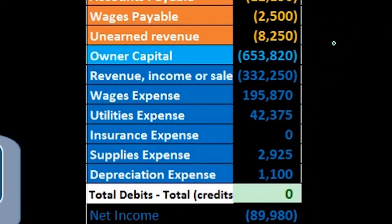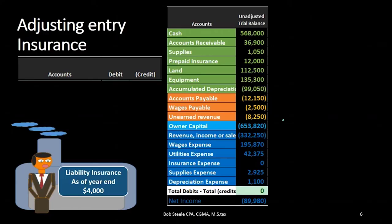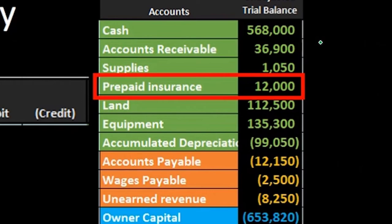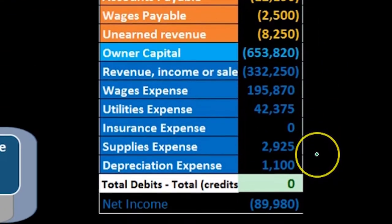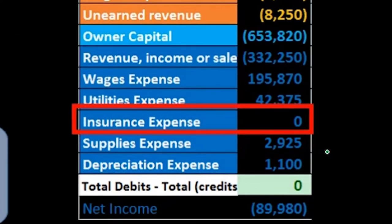If we know that and look at the trial balance, we can determine which accounts will be affected even without fully knowing what's going on. For example, we're talking about insurance expense, and if we look above the blue line for something related to insurance, we can see prepaid insurance. That looks like one of the accounts in our adjusting entry. For an insurance-related account in the income statement dark blue area, we have insurance expense. Those two accounts will be included in the journal entry.